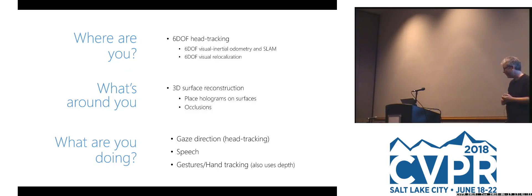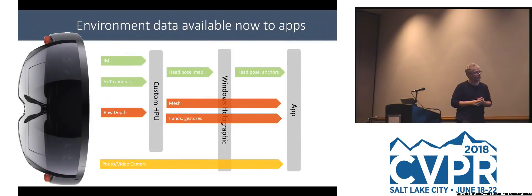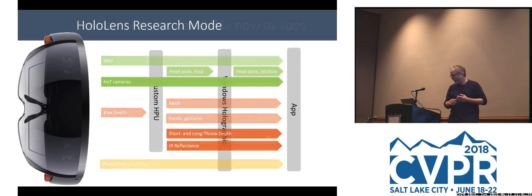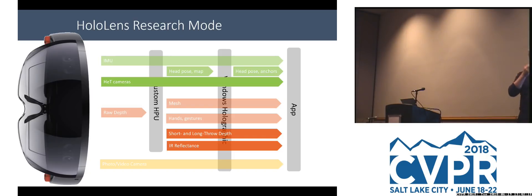The standard mode has all sensors going to the HPU and results made available to applications. In research mode, you get raw access to the head tracking cameras. Not the internal raw data directly — there are multiple exposures that get recombined — but the raw data are exposed. You can choose the mode in which they're exposed for optical flow, and at the same time you get an actively illuminated IR image, which is a recombination of the raw data, giving you both depth and IR. That IR spotlight can be quite useful for processing.